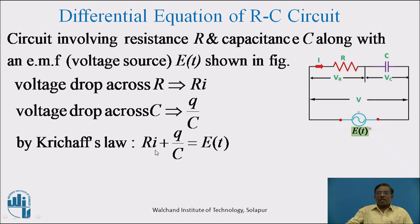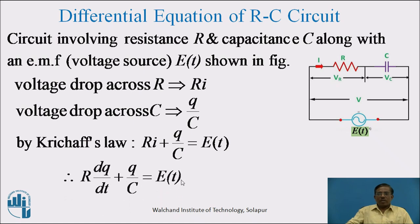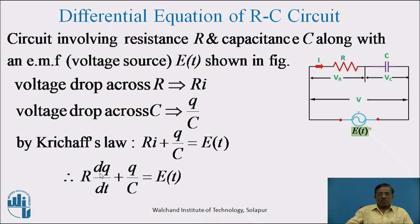Since current I = dQ/dt, the equation becomes: R·dQ/dt + Q/C = E(t). This is the required differential equation of the RC circuit in series. It also belongs to the linear differential equation of first order and first degree, with Q as the dependent variable and T as the independent variable. To solve this type of differential equation, we use the method of linear differential equations.